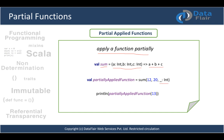A partially applied function uses the already-defined 'sum' function but only pre-fills some of its parameters, leaving others blank. The third value c is left undefined. When using it, you pass the remaining value and get the result. We have given only some values from the previously defined function — some parameters remain blank — that's why we call it partially applied.